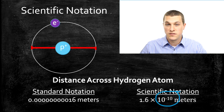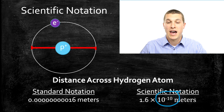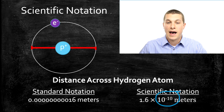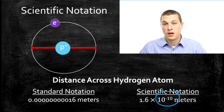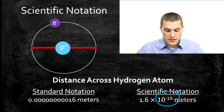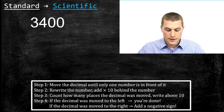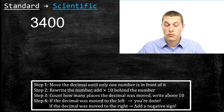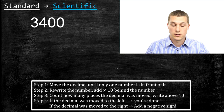What we're going to do in this video is go through a few examples of taking things back and forth between scientific and standard notation. Our first example is going to take the number 3,400, which is currently written in standard notation, and write it in scientific notation.